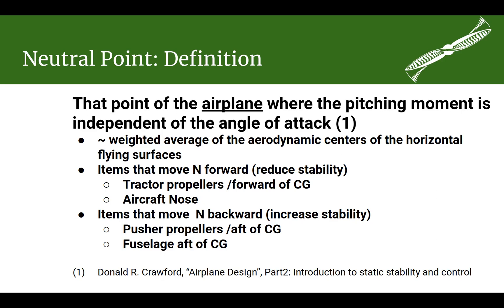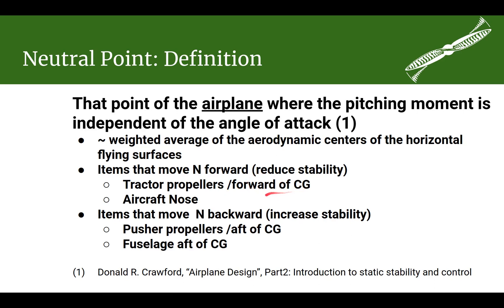There are some things that reduce stability by moving the neutral point forward, closer to the center of gravity — things like the nose of the airplane and tractor propellers where the propeller is forward of the center of gravity. You can increase stability by moving the neutral point aft, away from the center of gravity. Things that do that include pusher propellers behind the center of gravity, nacelles, and the fuselage that's aft of the CG. However, the fuselage and propellers don't have that much impact on the neutral point.